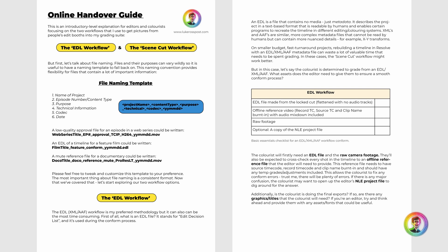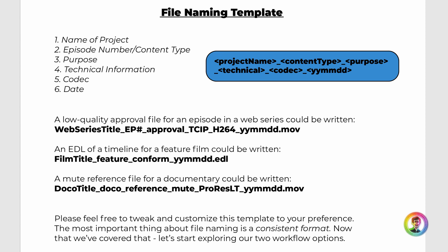Let's talk a little bit about file naming. You can see here what information I always make sure to include in my file names: the name of the project, the episode number or the content type — for example, doco, feature, or episode two — the purpose of the file. It's really important to just state in the file name what this file is actually for. Any technical information — for example, you can see in the web series example I've included TCIP, timecode and picture. That's a bit of technical information that's very relevant to the file, so it should be stated in the file name.